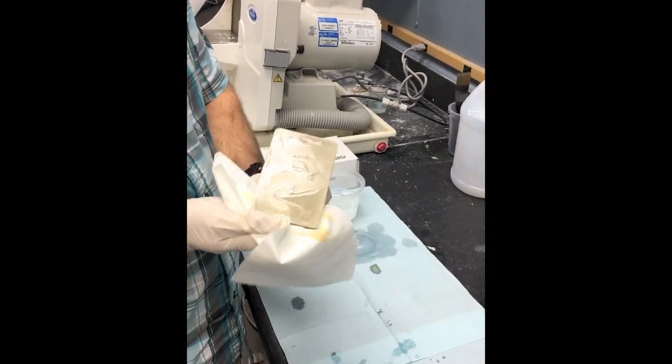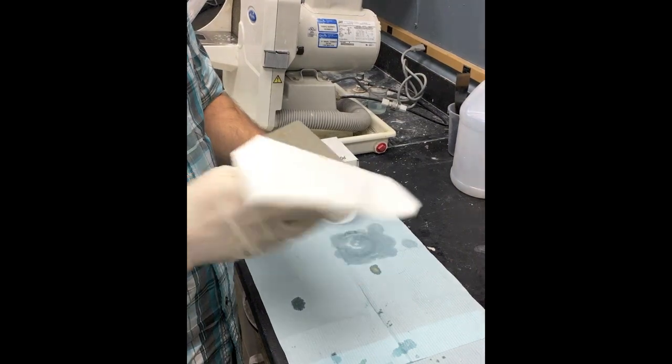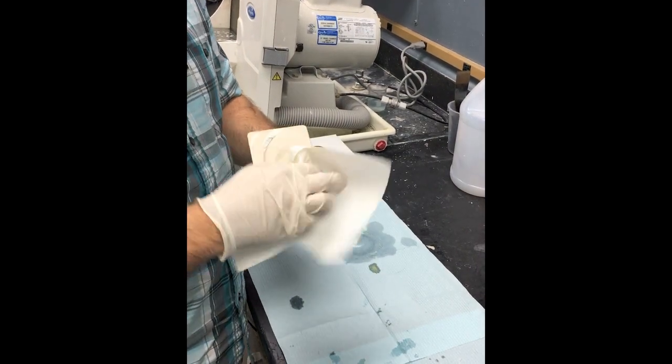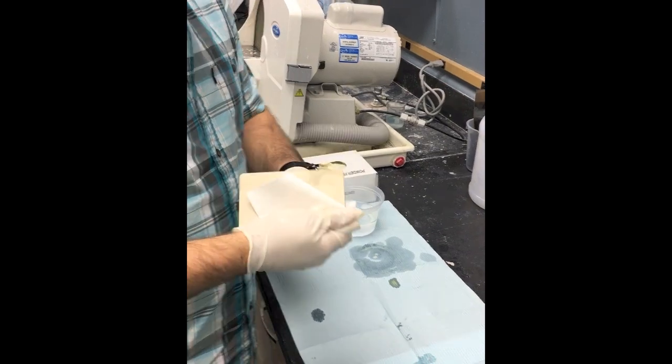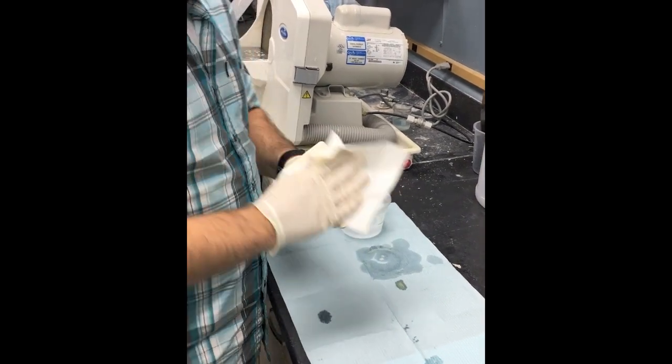Just make sure that before you put them in the light cure box, you have completely dried the models. No resin or alcohol residue left on them, so that way when they come out, they're not tacky.